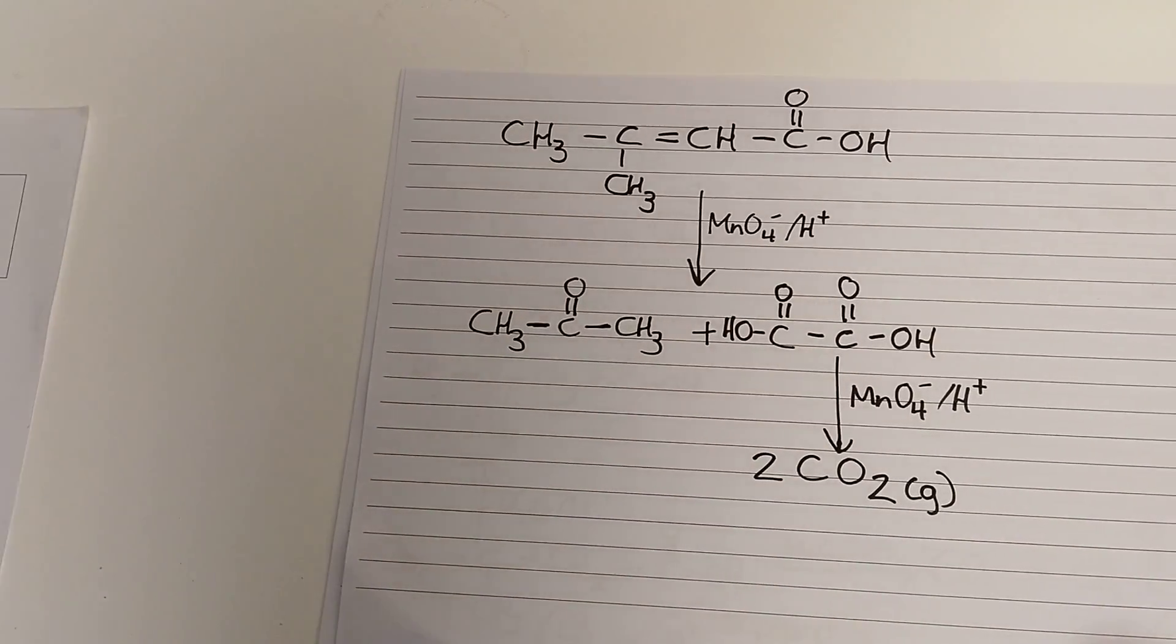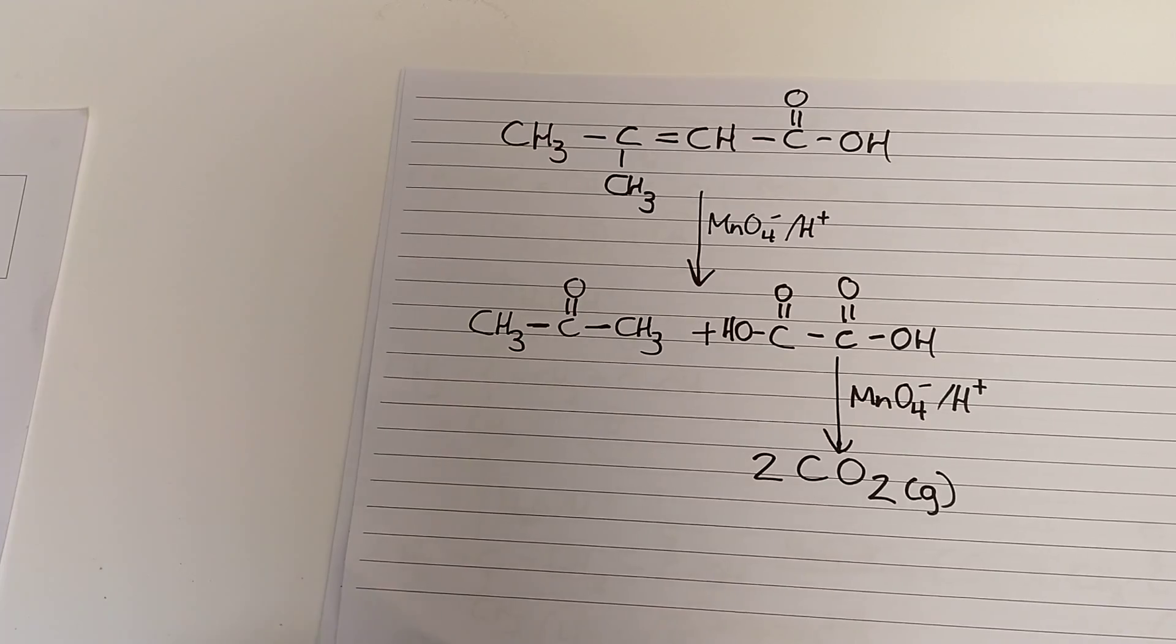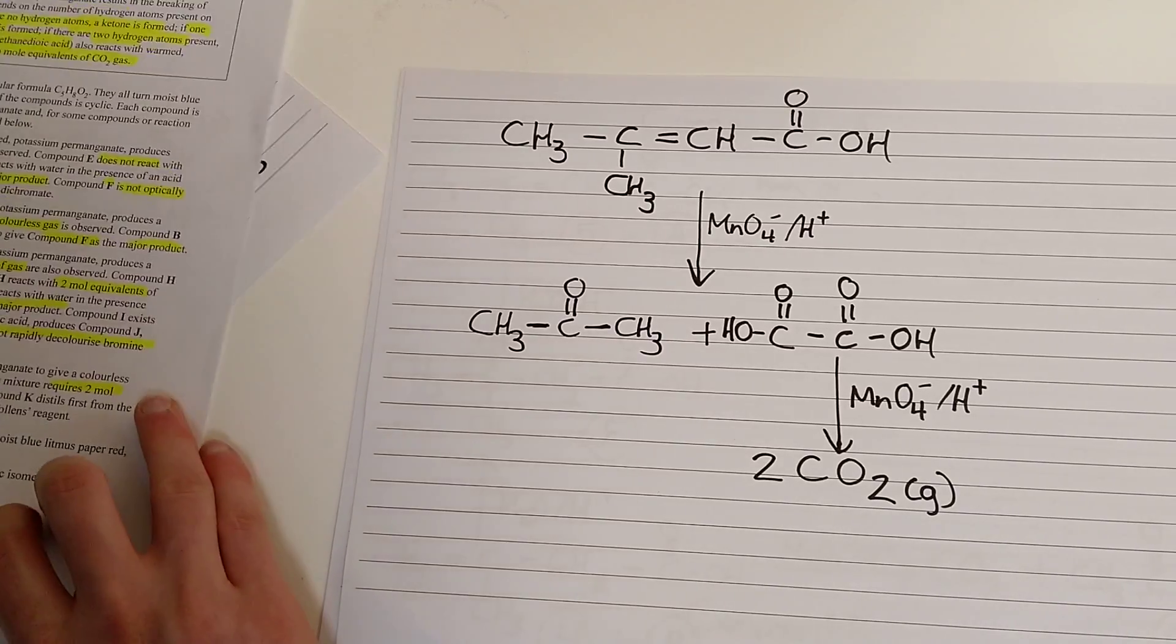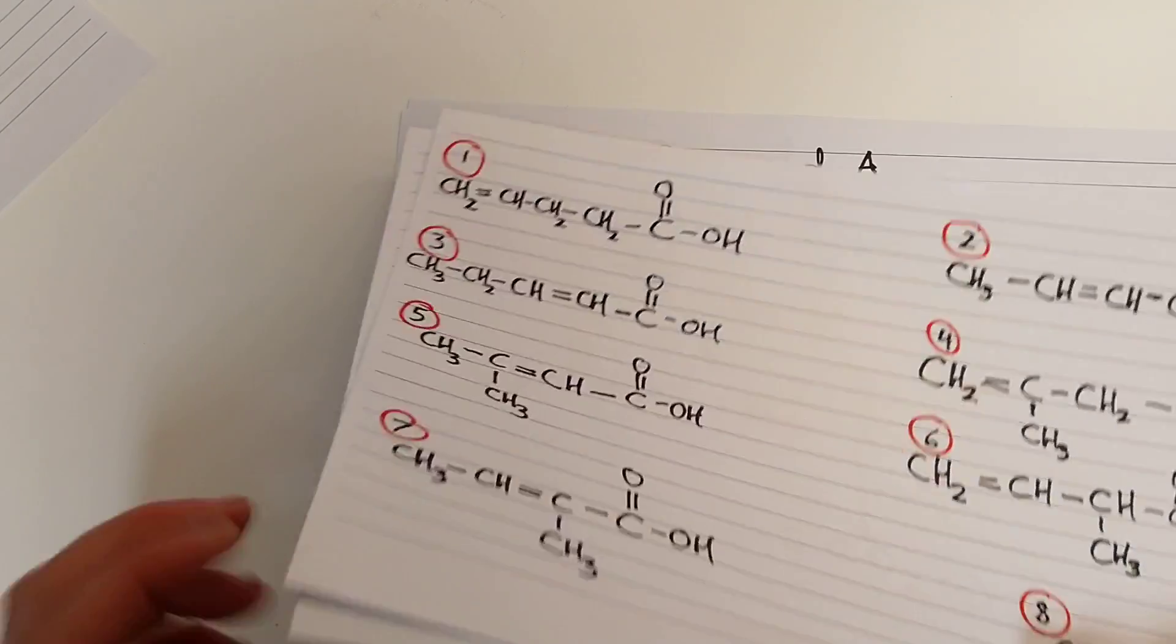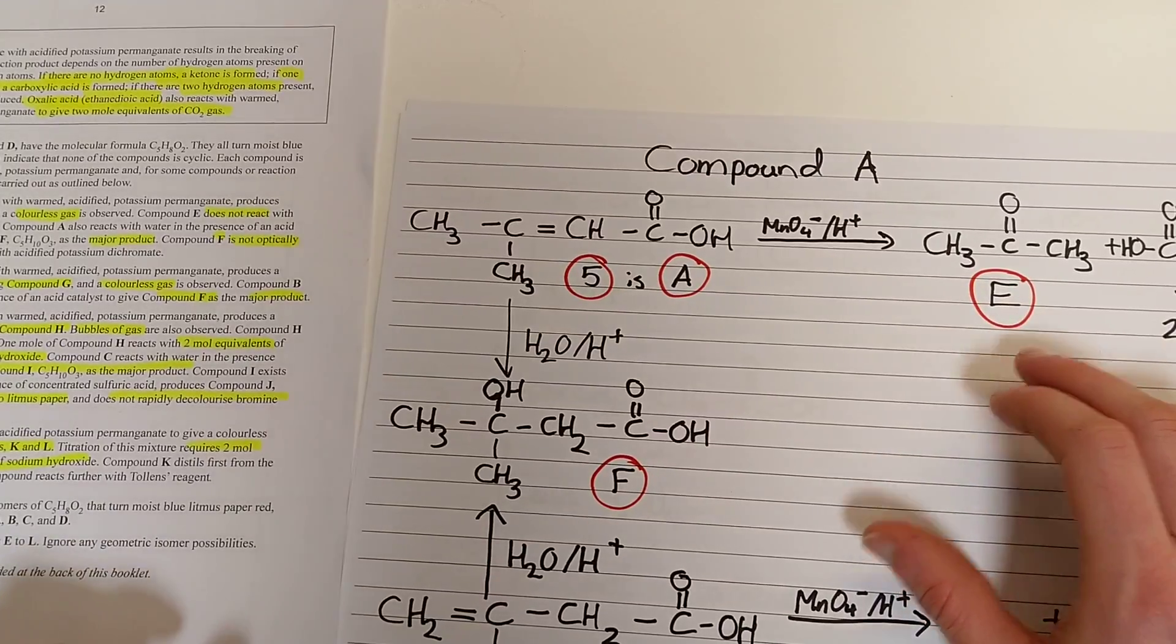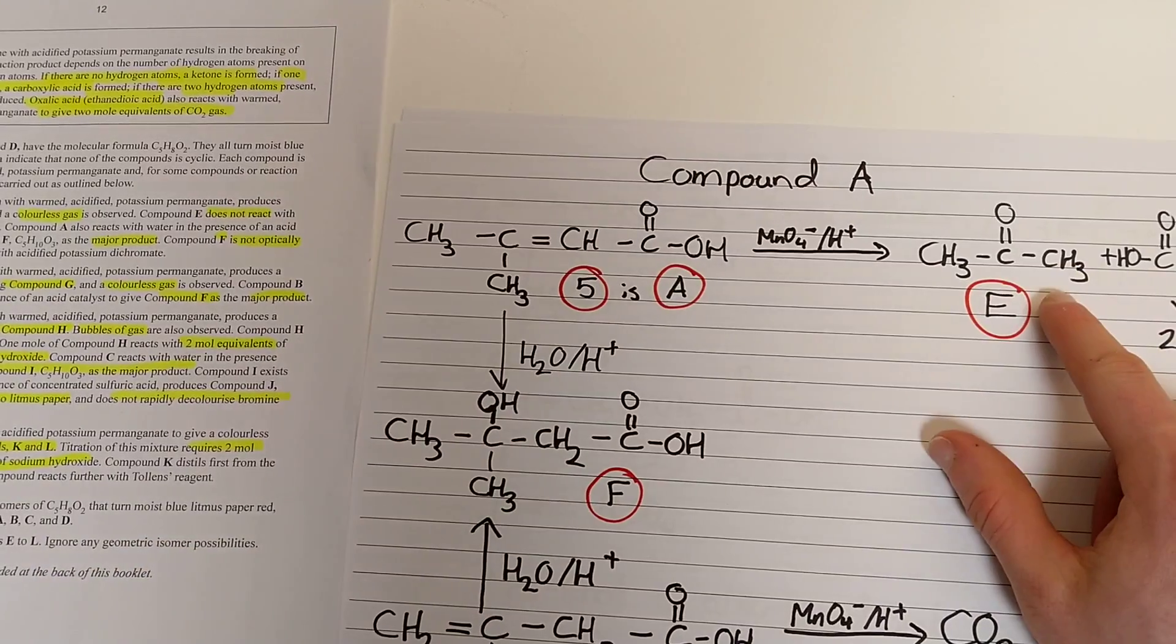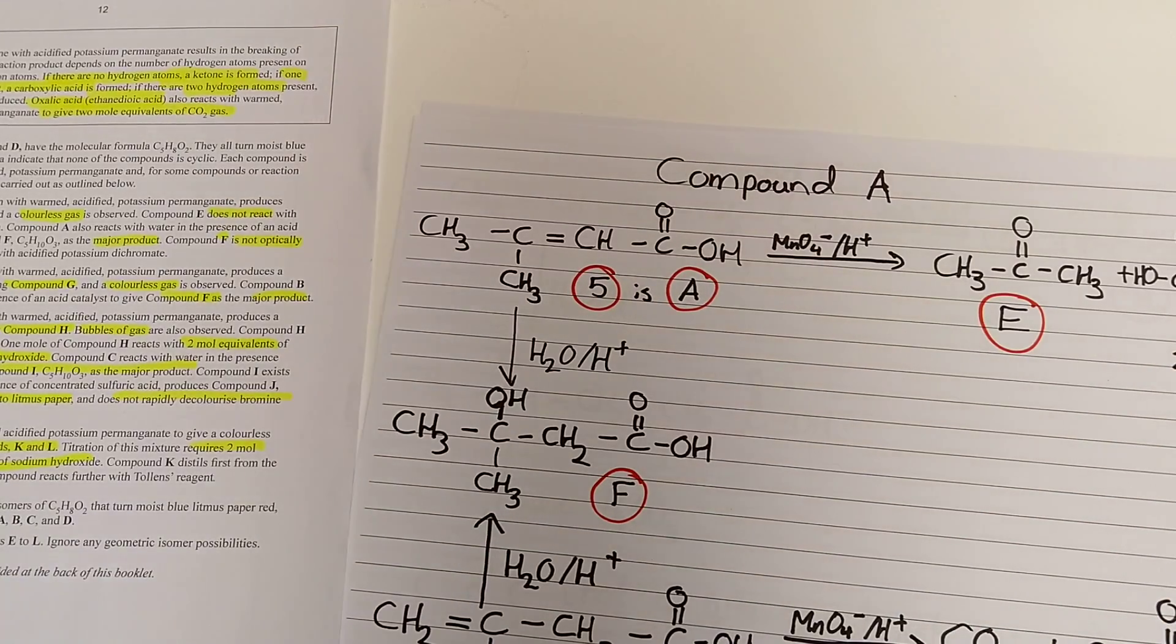Those are the rules to help us figure out compounds E through L. Let's apply it to solving compound A. Rather than checking these rules with all of the structures, all of those eight structures I came up with, let's just reveal the answers. So, I found that of these eight compounds here, I found that compound A is actually compound 5, the one we were just looking at. So with compound 5, if it is compound A, it needs to react with permanganate to form something that doesn't react with sodium carbonate. We're told in the rules, it can't react with sodium carbonate. In other words, it's lost its carboxylic acid functional group. Yep, this one has. And again, we form that ethanedioic acid to produce gas. And again, it says when compound A reacts with acidified permanganate, a colorless gas is observed. So this checks out.